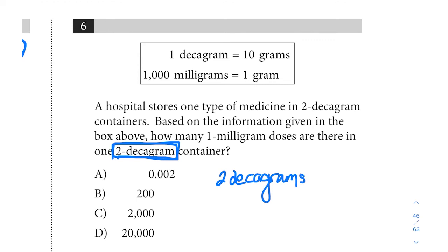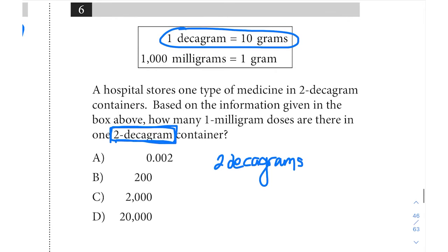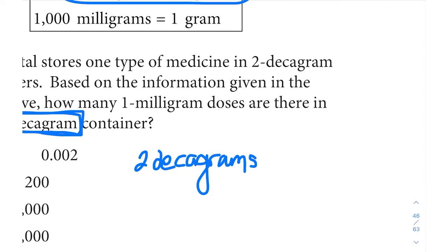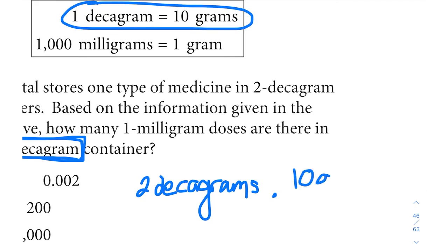So here if we have two decagrams, well we know that one decagram is 10 grams. So how much would two decagrams be? So if you intuitively said 20, that's correct. And I just want to write out the calculation so you can see where that comes from. If we're doing conversion here, there are 10 grams in one decagram.